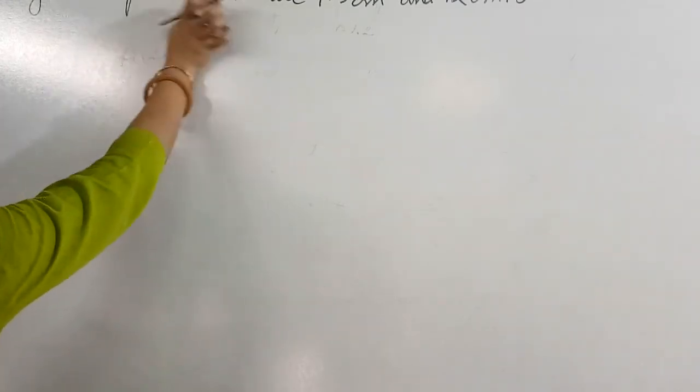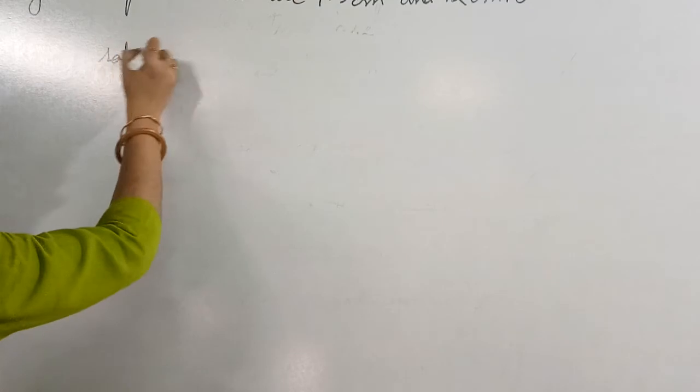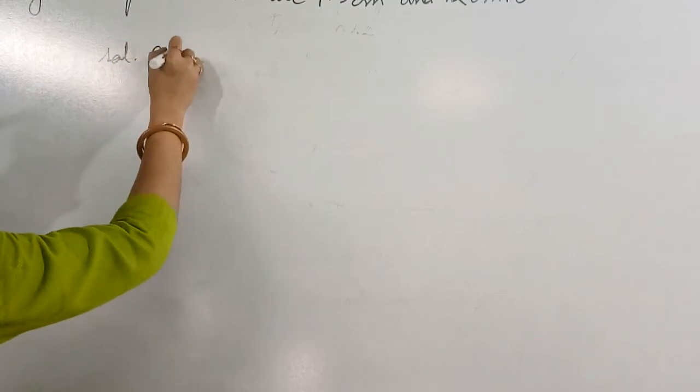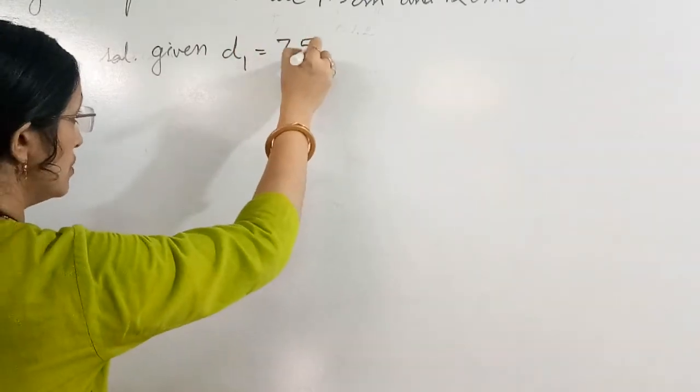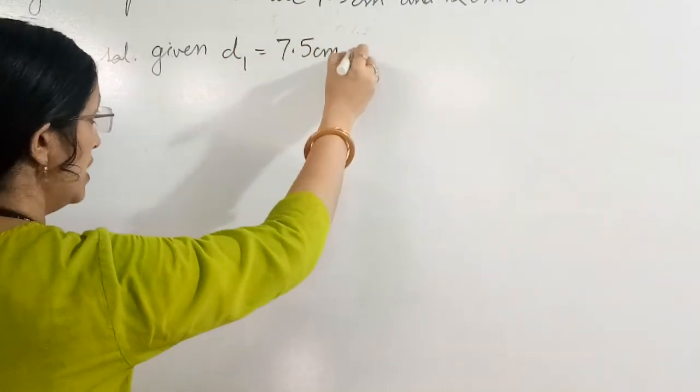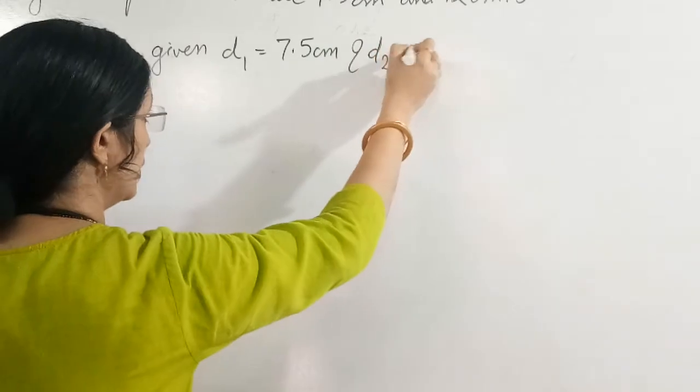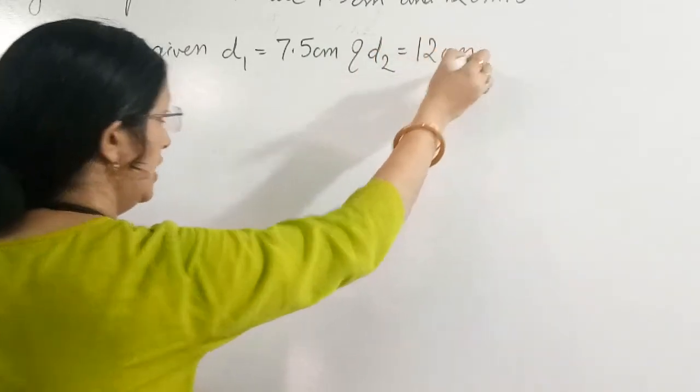Before writing the area we can write given also. So solution, what is given? Given diagonals: D1 is equal to 7.5 cm and D2 is equal to 12 cm.